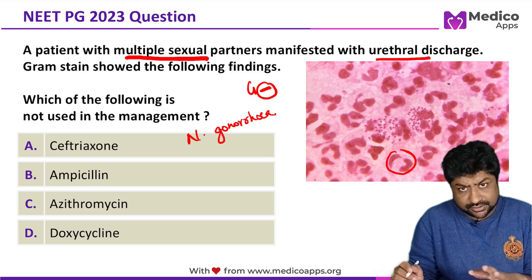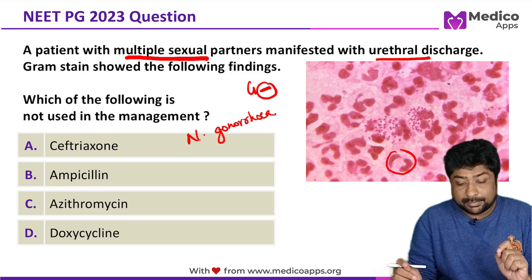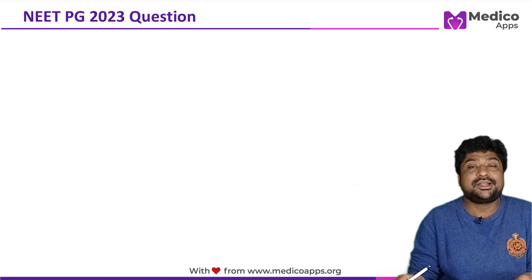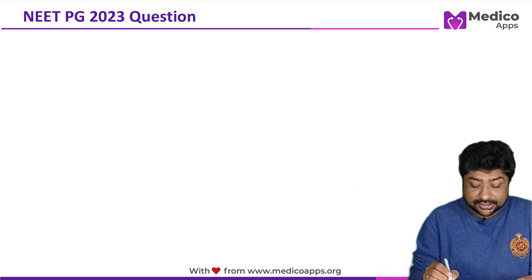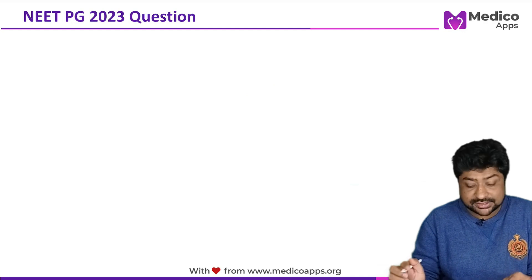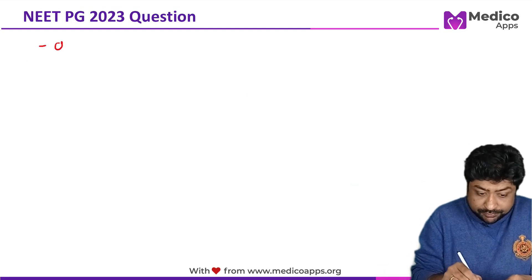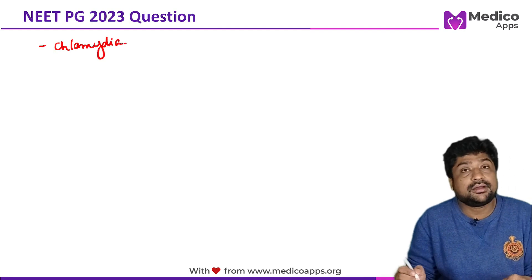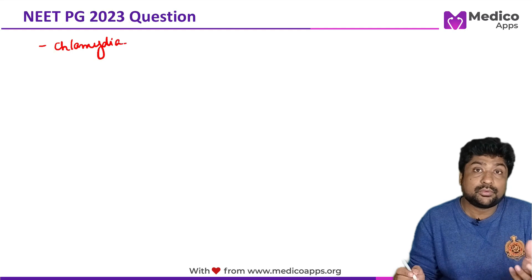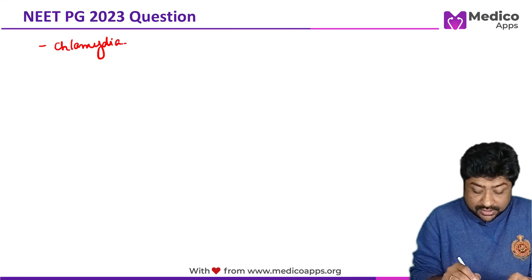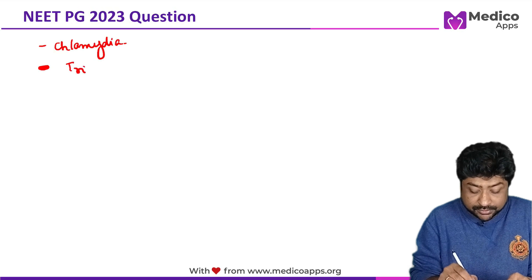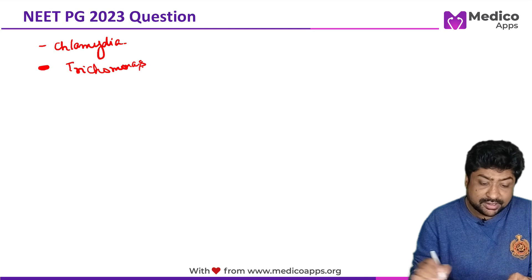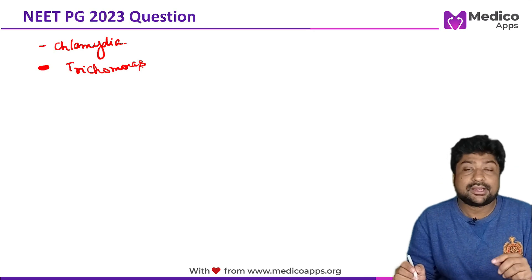Let's learn the differential diagnosis of urethritis. The first important differential diagnosis is Neisseria gonorrhea. The second would be Chlamydia — very similar symptoms — and generally a Neisseria infection can coexist with a Chlamydia infection. The next important differential diagnosis is Trichomonas vaginalis.